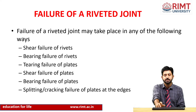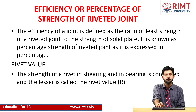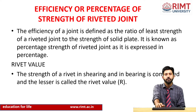Edge distance is the distance between the corner of the plates and the first or last rivet hole. Efficiency of a riveted joint is defined as the ratio of the least strength of the riveted joint to the strength of a solid plate, expressed as a percentage. Rivet value is the minimum strength of the rivet in either shearing or bearing. For the strength of a connection, we also find the strength of the plates after punching the holes.